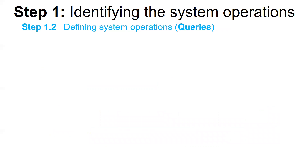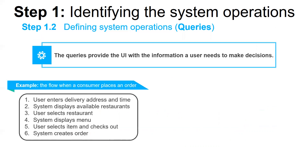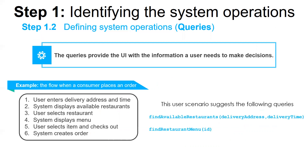Besides implementing commands, an application must also implement some queries. The queries provide the UI with the information the user needs to make decisions. We don't have in mind the particular UI design for the food-to-go application, but we can consider the flow when a consumer places an order. This user scenario suggests the following queries: find available restaurants, which retrieves the restaurants that can deliver to a specified delivery address at a specified time; and find restaurant menu, which retrieves information about a restaurant including the menu items.